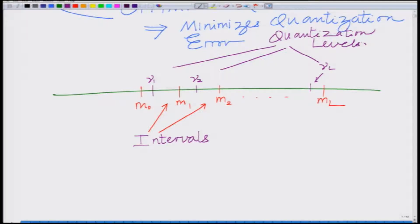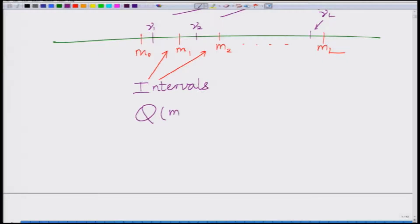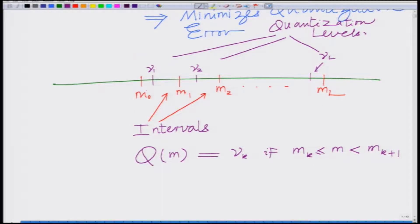From the quantization intervals and the quantization levels, one can determine the quantizer — because remember, the quantizer maps sample M to mu_k if M_k ≤ M < M_{k+1}. So the intervals and quantization levels together determine the quantizer. To design a better or improved quantizer, we have to optimally choose the quantization intervals and levels which minimize the quantization error.